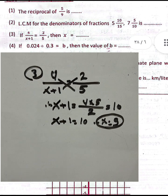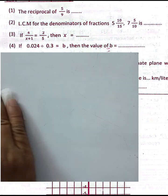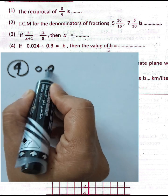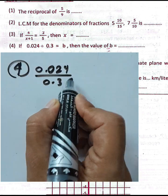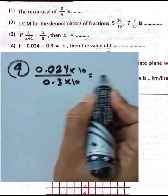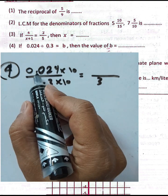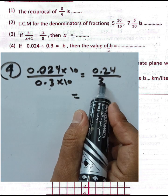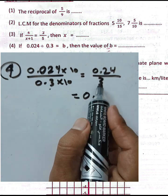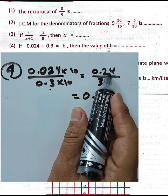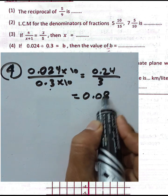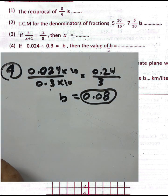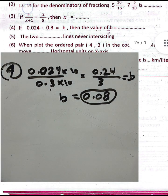Question number four: 0.024 divided by 0.3 equals b. Multiply numerator and denominator by 10 to cancel the decimal. This gives 0.24 divided by 3. Then 24 divided by 3 equals 8, so the result is 8 hundredths. The value of b is eight-hundredths.